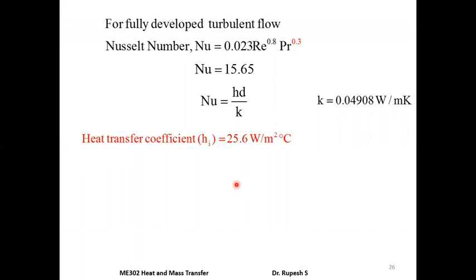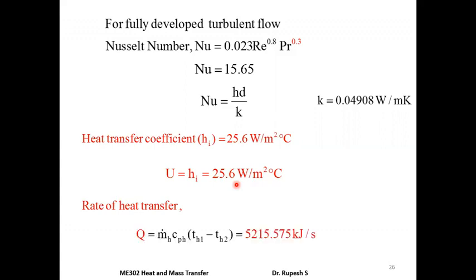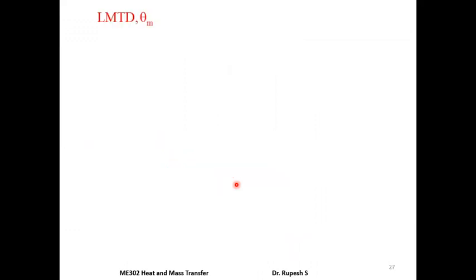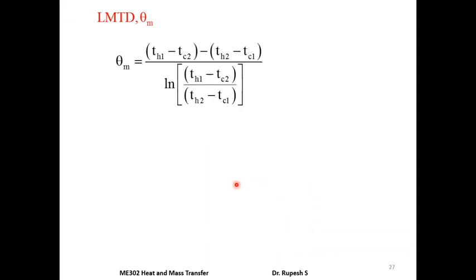Since U = hi, overall heat transfer coefficient U = 25.6 W/m²°C. Next, heat transfer rate q = m_dot_h × Cp × ΔT of hot fluid. Substituting values gives q = 5215.575 kJ/s.